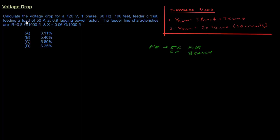We've been asked to calculate the voltage drop on a single-phase 120-volt circuit, where the length of that circuit is 100 feet, and at the end of those 100 feet it's feeding a load of 50 amps at 0.9 lagging power factor. We've also been given the line characteristics — resistance in ohms per thousand feet and impedance in ohms per thousand feet.